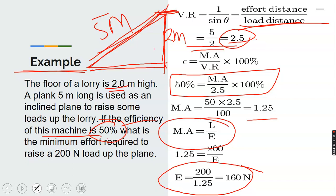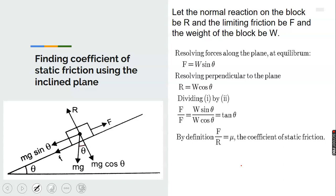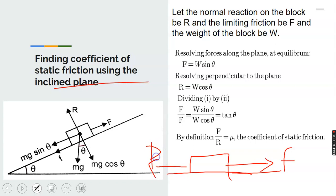We can also use the inclined plane to find the coefficient of static friction. When dealing with friction on a horizontal table, the applied force P equals friction F. The normal reaction R is perpendicular to the plane. To analyze forces on an inclined plane, we resolve the weight of the block both along and perpendicular to the plane.